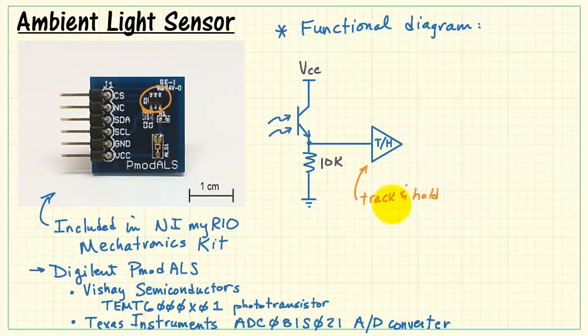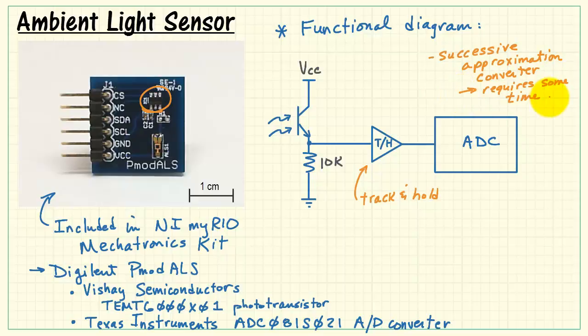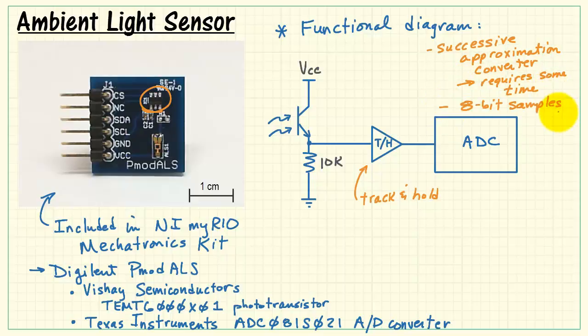Inside the analog to digital converter, we begin with a track and hold device. We either pass that analog voltage through, that's tracking, or we hold it at a constant level. Track and hold output is connected to the analog to digital converter. This is a successive approximation style converter. It does require a reasonable amount of time to make the conversion, and it produces 8-bit samples.